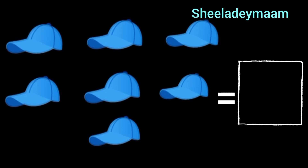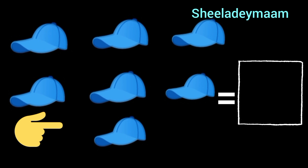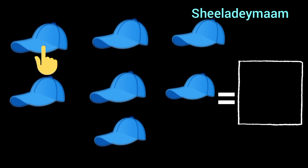Now children, tell me, what are these? These are caps. So children, first we will count the caps and then write the number in the box. While counting, use your finger. First put your finger on the first cap and then start counting. So let's count the caps.